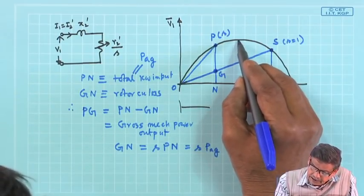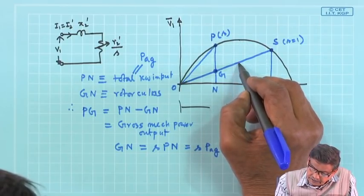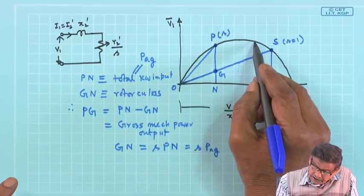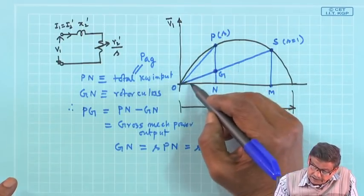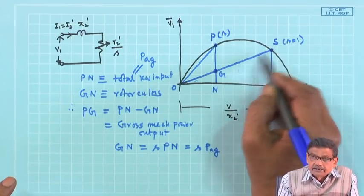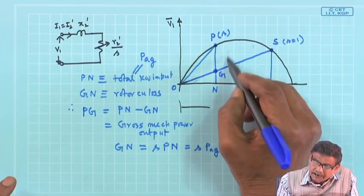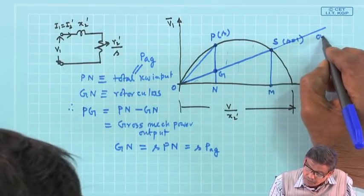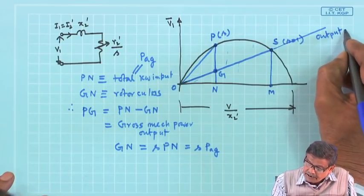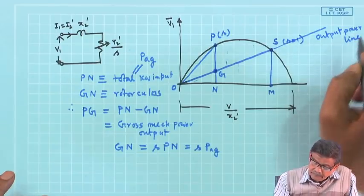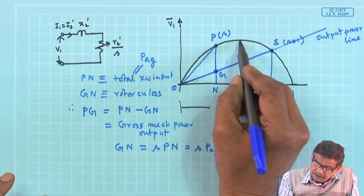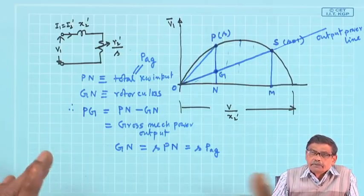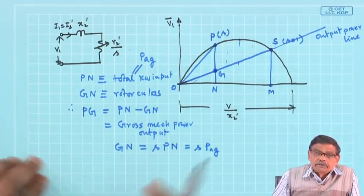If the machine operates at a given slip, draw a vertical line — the intersection gives the copper loss at that slip and the mechanical power output above it. This vertical intersection between the perimeter and the standstill condition line gives the mechanical power output. That is why this line is called the output power line.